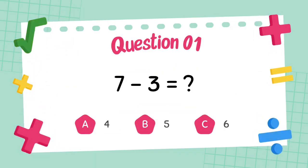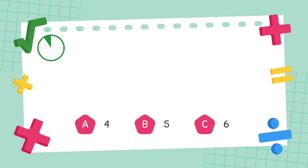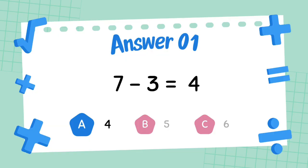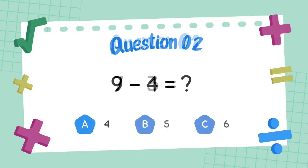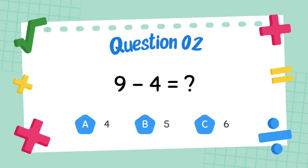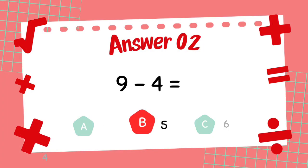What is 7 minus 3? The answer is 4. What is 9 minus 4? The answer is 5.